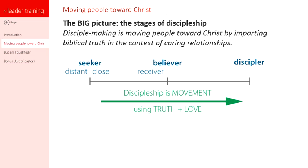There are two types of believers as well. There's what we're going to call the receiver, and there's the giver. It's okay for a believer to be a receiver, especially at the beginning — someone who is just filling themselves with God's truth and love, overwhelmed by this new experience of grace. But at some point we need to transition into being givers, realizing this isn't just about us — that Jesus has work for us to do and that he saved us for a purpose.